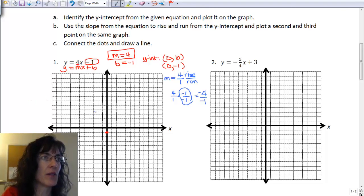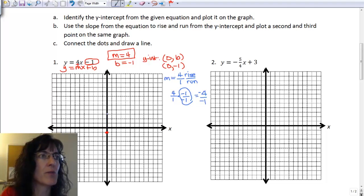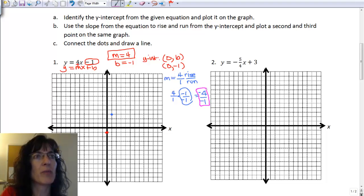Starting at the y-intercept that I already plotted, I want to use the rise of 4, that first one, 1, 2, 3, 4, and a run of a positive 1. Now come back and I want to use my second form of my slope, which is negative 4 over negative 1. I need to do a rise of negative 4, so 1, 2, 3, 4. A negative means I have to go down. Then a run of negative 1, so I have to go to the left 1. There are my 3 points.